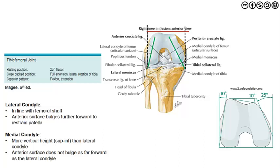When we look at the lateral condyle, it is in line with the femoral shaft. The anterior surface bulges further forward to provide a static restraint to the patella. The medial condyle has more vertical height from a superior to inferior orientation, but the anterior surface does not bulge forward, making it a shorter surface than the lateral condyle. There is a slight angulation variation from 10 degrees on the lateral side to 25 degrees on the medial side, with a 10-degree difference in the prominence of that lateral femoral condyle — which has that increased height and anterior bulge to provide static restraint to the patella.